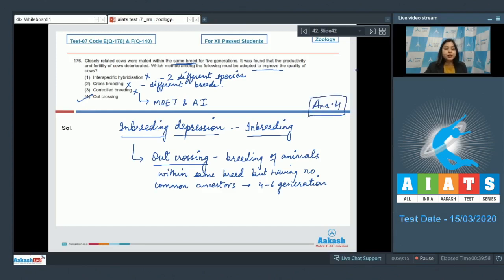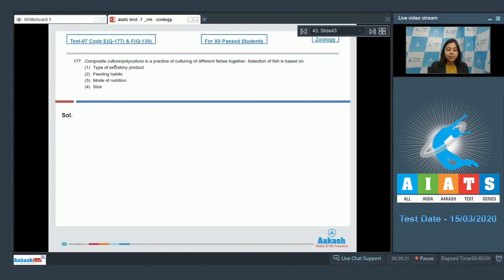Moving on to the next question—177: Composite culture or polyculture is a practice of culturing different fishes together. Selection of fish is based on... Type of excretory product is incorrect as type of excretory product will not interfere with polyculturing of fish. Number two, feeding habits is the correct answer, as considering feeding habits is necessary for polyculture